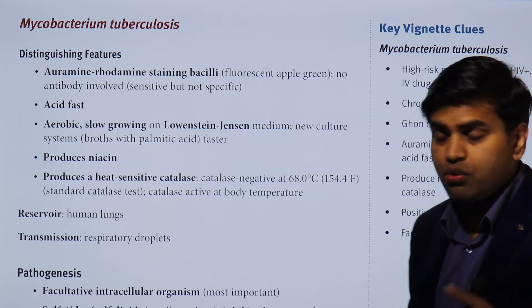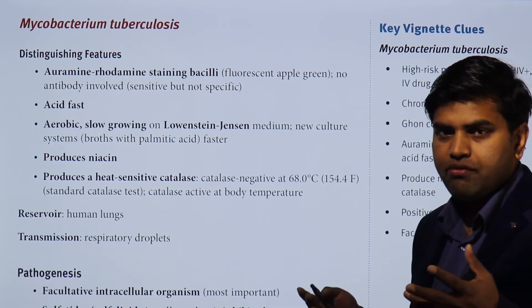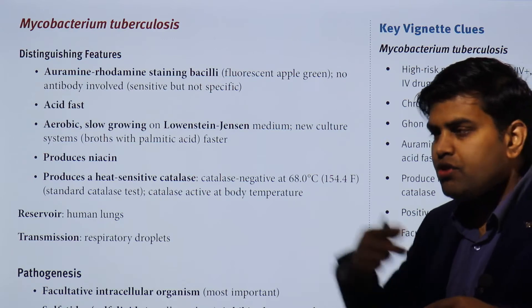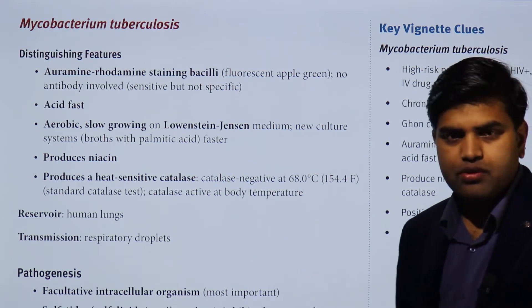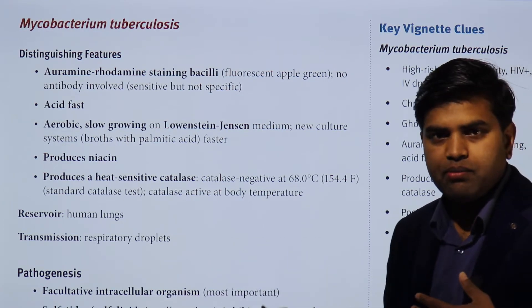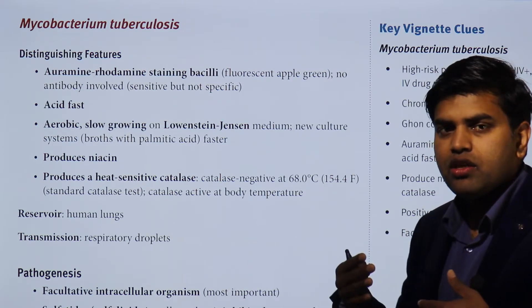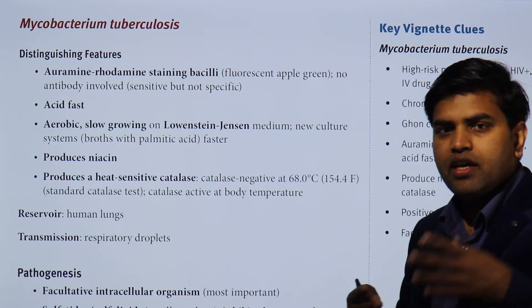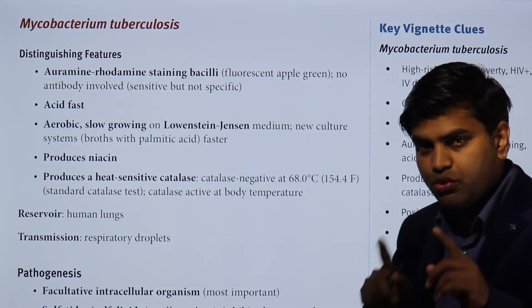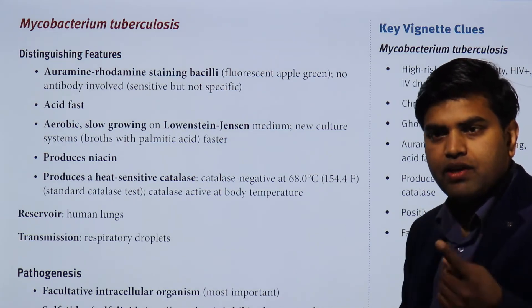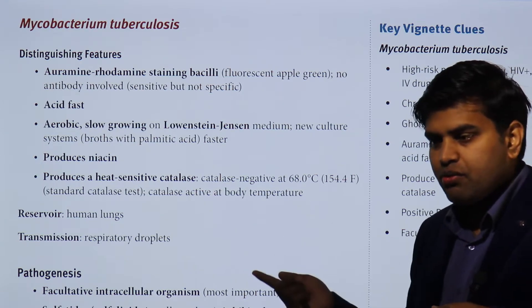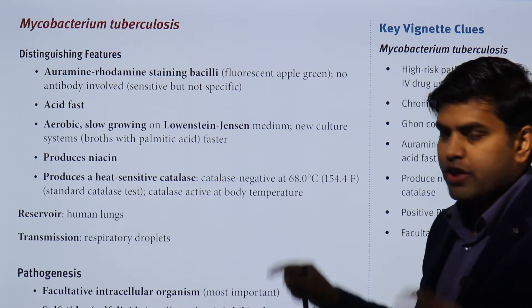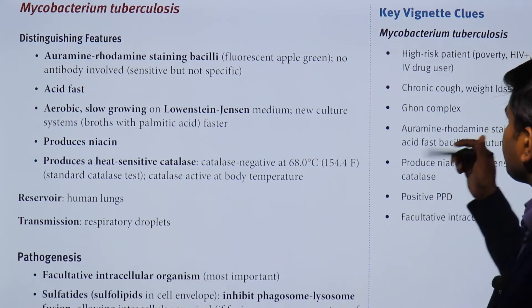In contrast, droplet infections like coronavirus and Corynebacterium diphtheriae require large droplets greater than five micrometers. These settle quickly due to gravity and travel only about one to one-and-a-half meters. For droplet infection, you need close contact within one to one-and-a-half meters. But for airborne infection like Mycobacterium tuberculosis, even across a large conference room you can get infected without close contact. This is the key difference between airborne and droplet transmission.